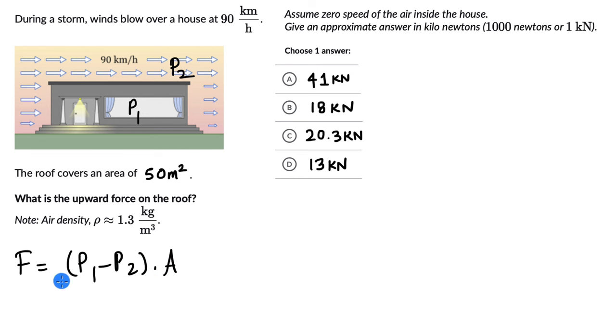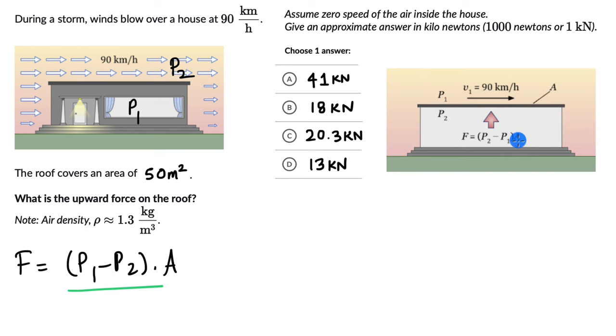We need to figure out what is P₁ minus P₂. If we have a look at this image, this is what we discussed. The upward force is because of the pressure gradient. Let me correct the notation in this image. Let's say this is P₂, this is P₁, and the gradient would be P₂ minus P₁.